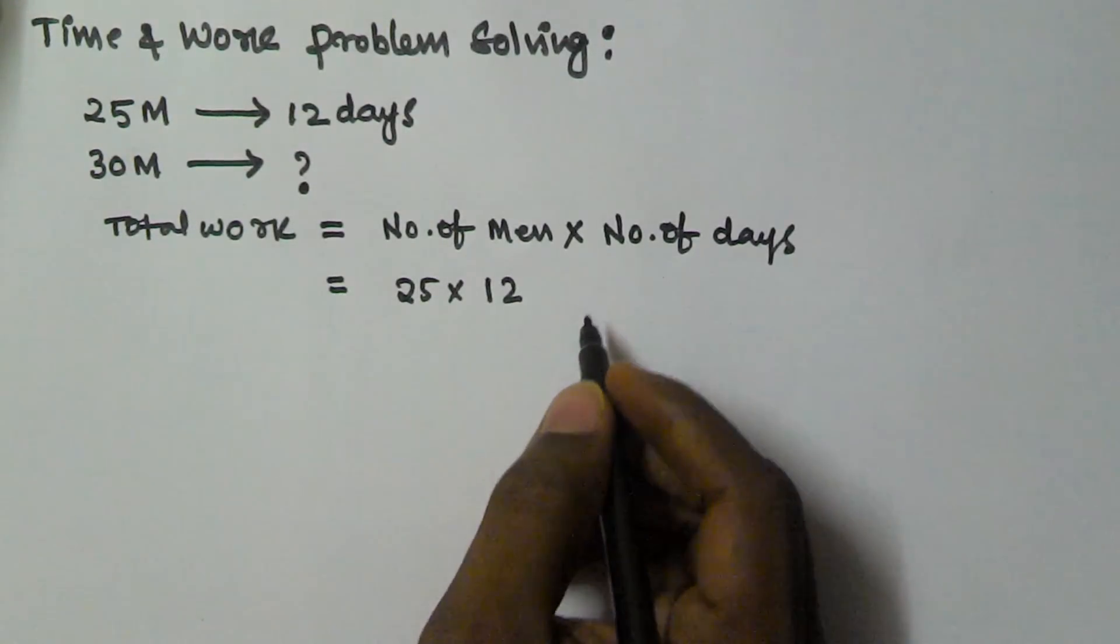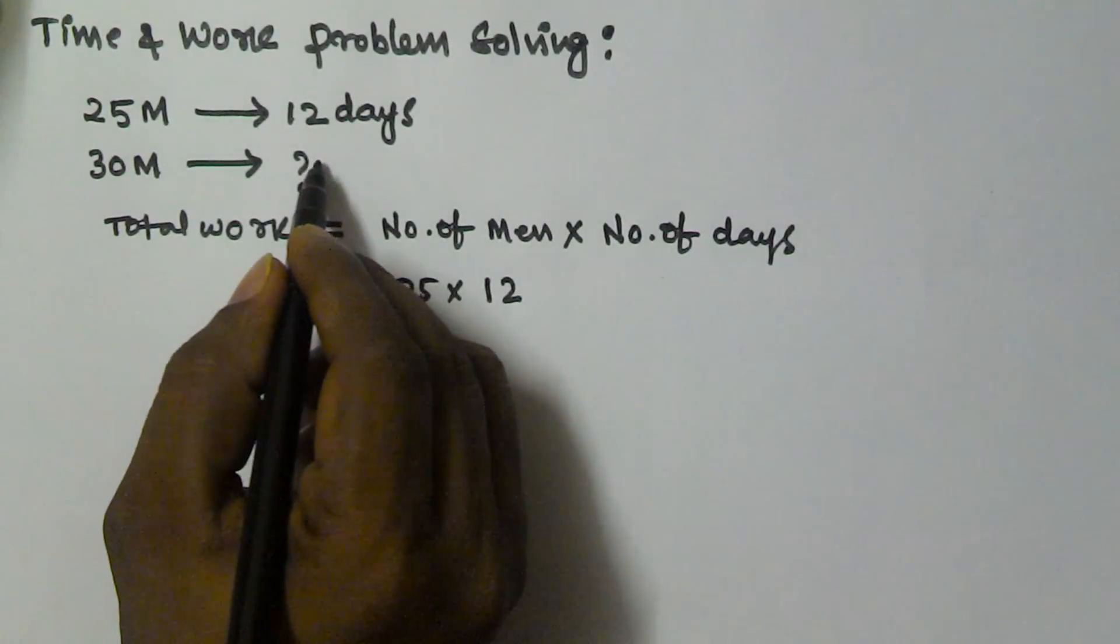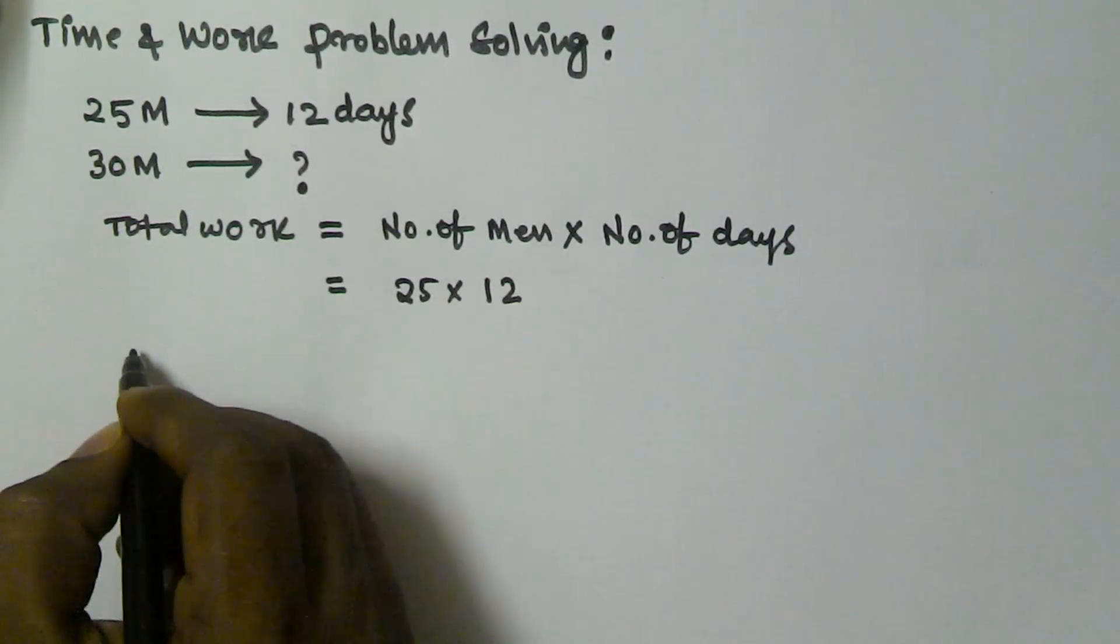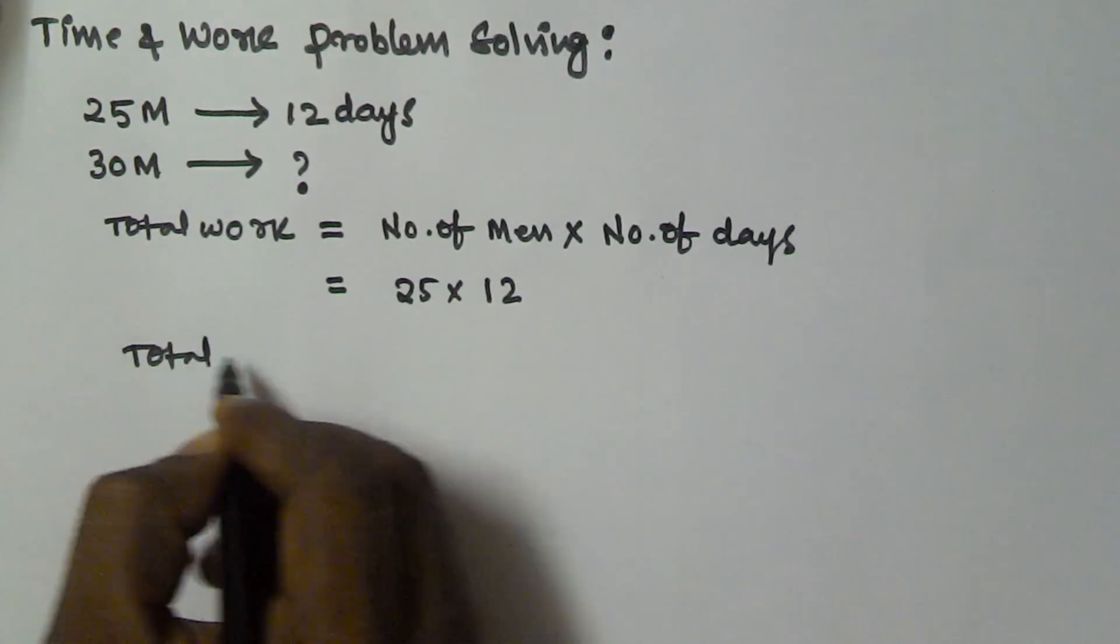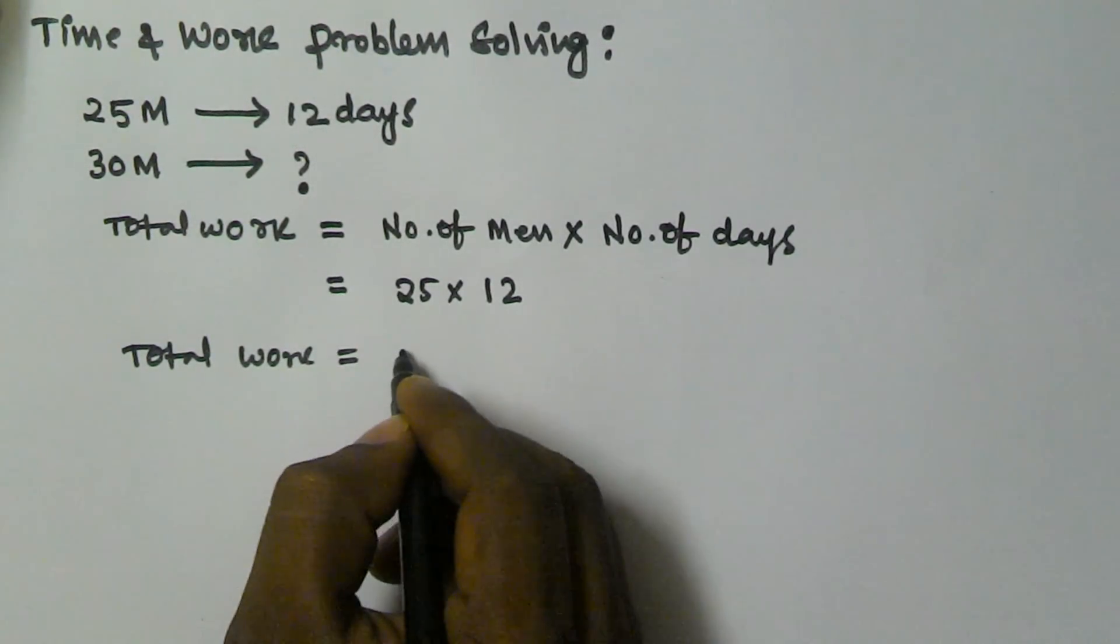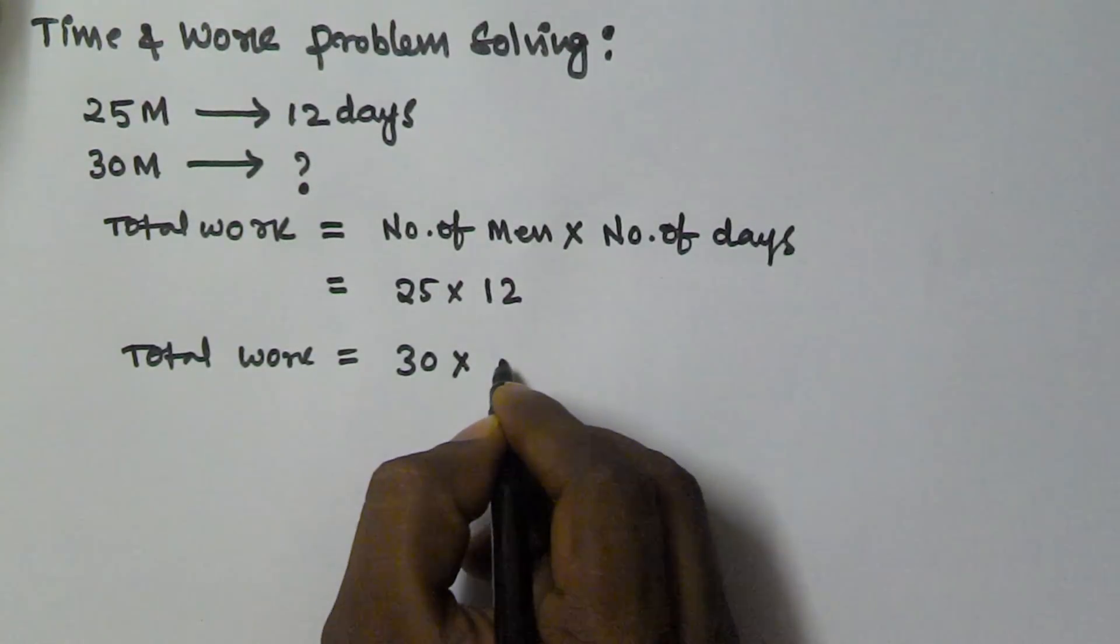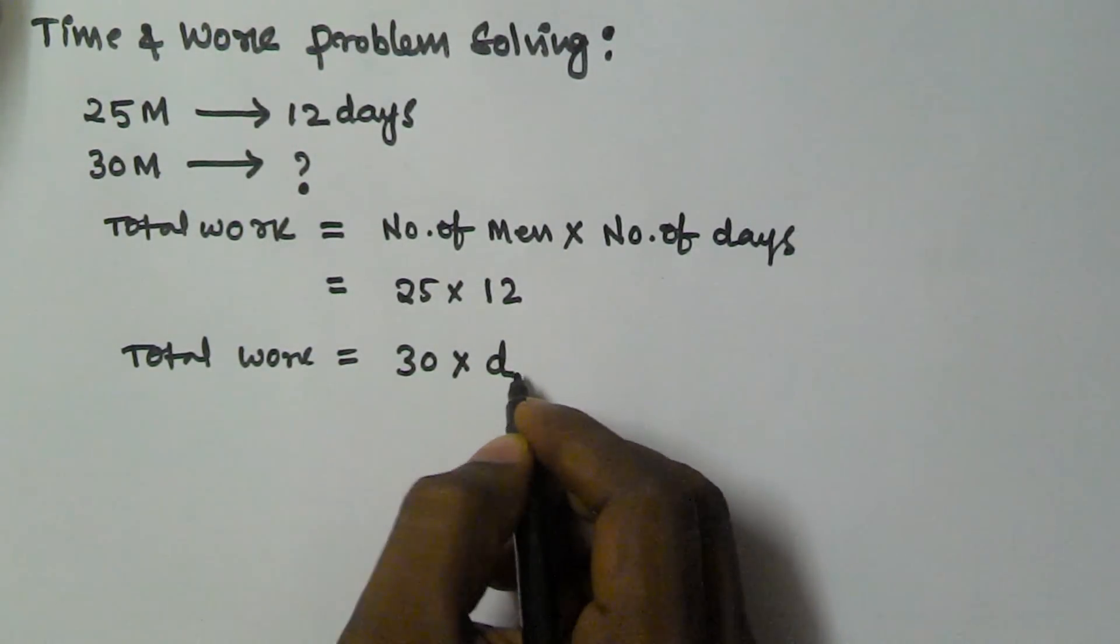This is the total work. The 30 men will work for a certain number of days. In that case, the total work equals the number of men, 30, times the number of days D, which we need to find.